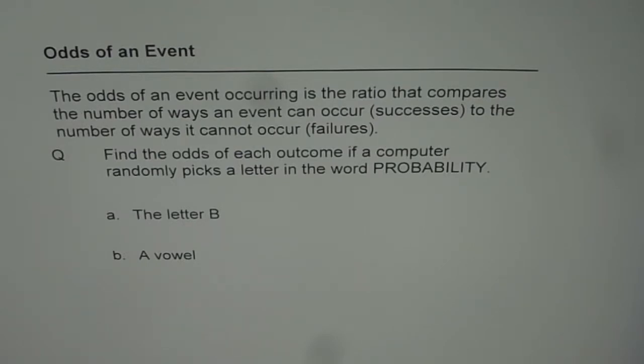In probability, in the denominator we have total number of items, the whole thing, but in odds of an event it is ratio of successes to failures, not the whole thing in the denominator. So that is how it is different.